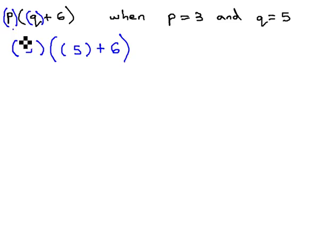Notice this is the exact same problem that was written originally. I've just replaced the p with a 3 in parentheses and replaced the q with a 5 in parentheses. From here, we can use order of operations to simplify what's left.